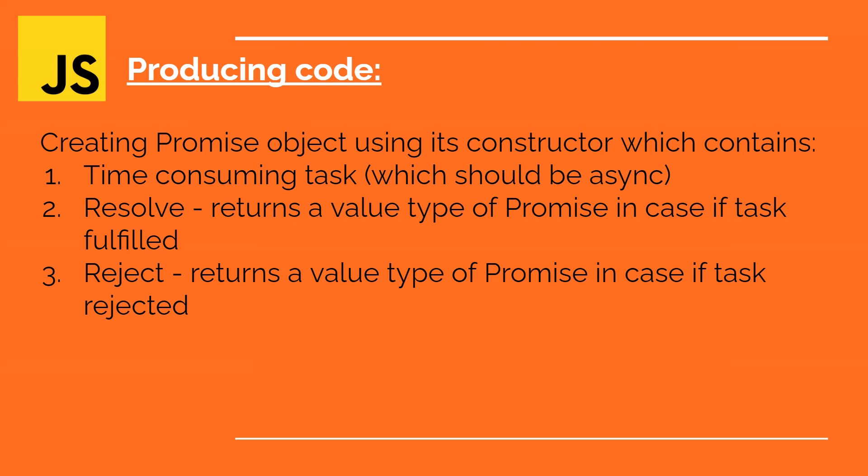The promise object will have two parameters: resolve and reject. Resolve returns a promise value in case the task is completed successfully, and reject returns a promise value in case the task is rejected. In the producing code, you create the promise object and inside its constructor function you pass two arguments — resolve and reject — and write the time-consuming task inside the promise object.